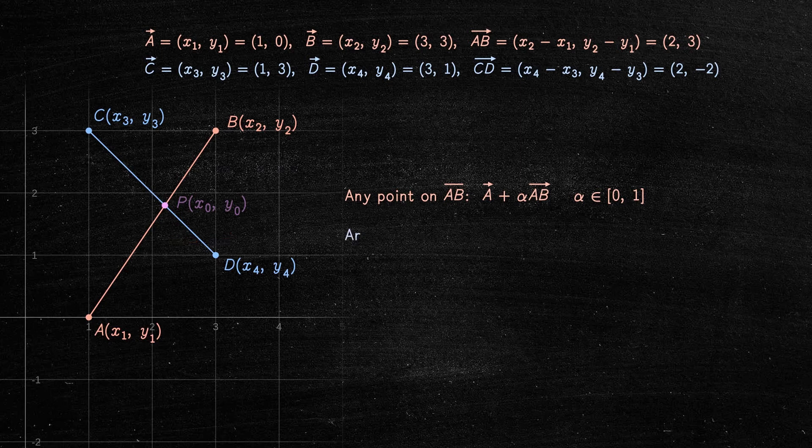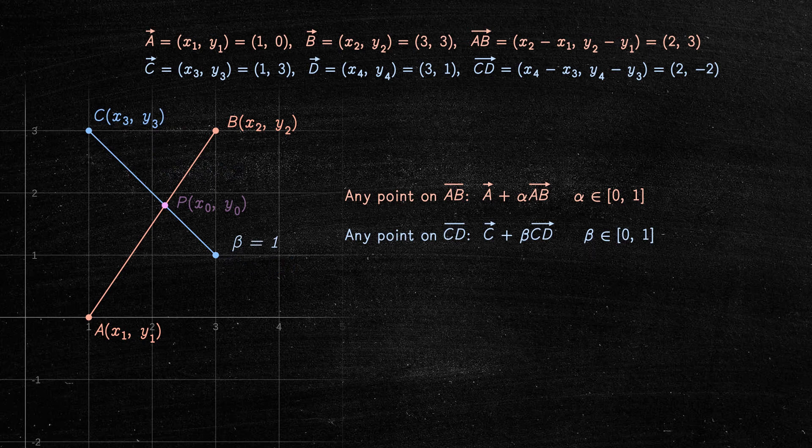In the same way, any point on the line segment CD can be represented as follows, where beta is a real number between 0 and 1. For example, if beta is 0, it gives us the point C. If beta is 1, it gives us the point D. If beta is 0.5, it gives us the midpoint of the segment CD, and so on.